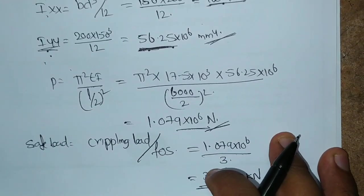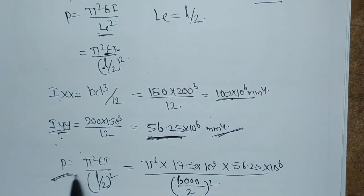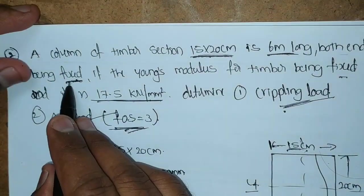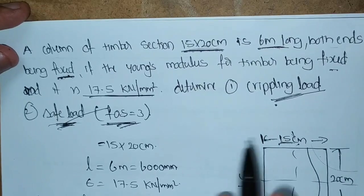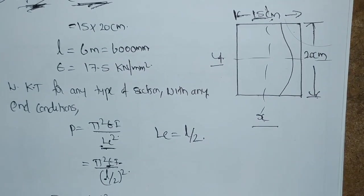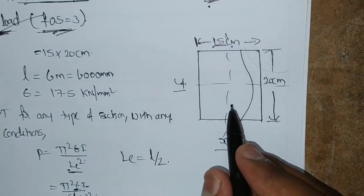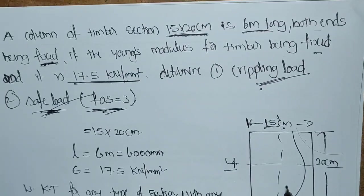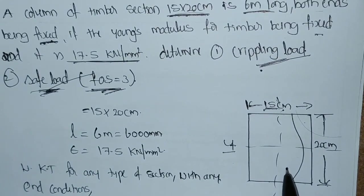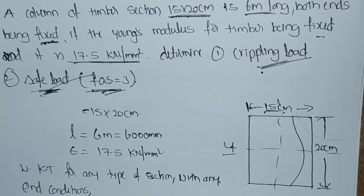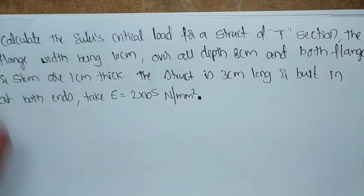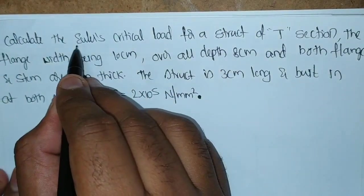Like this, the safe load and crippling load P we have to calculate. This is for both ends fixed conditions. If the conditions differ, the formula is going to change. Now we will see another example. For a circular section we have solved, for a rectangular bar we have solved. Now we will find out for a T-section.